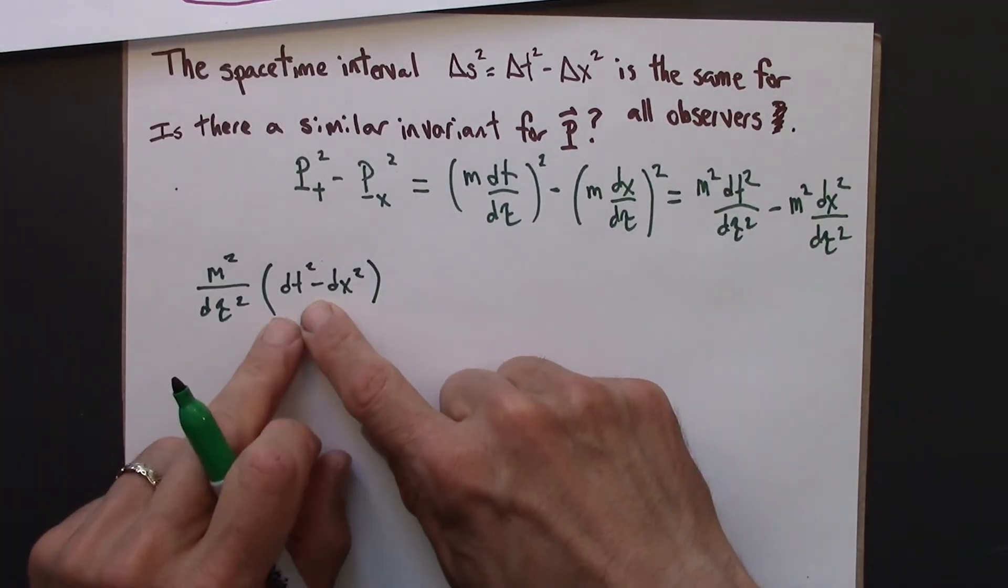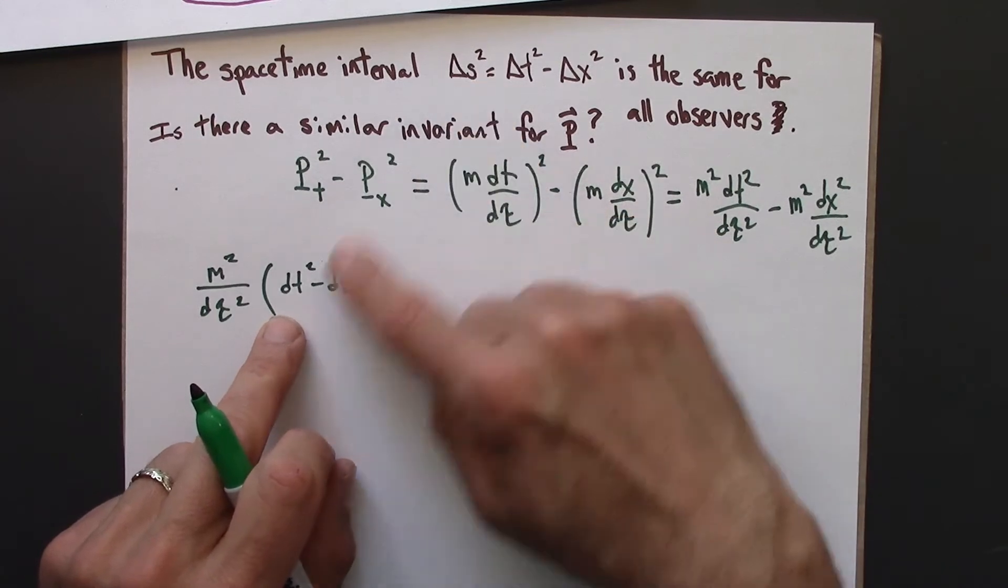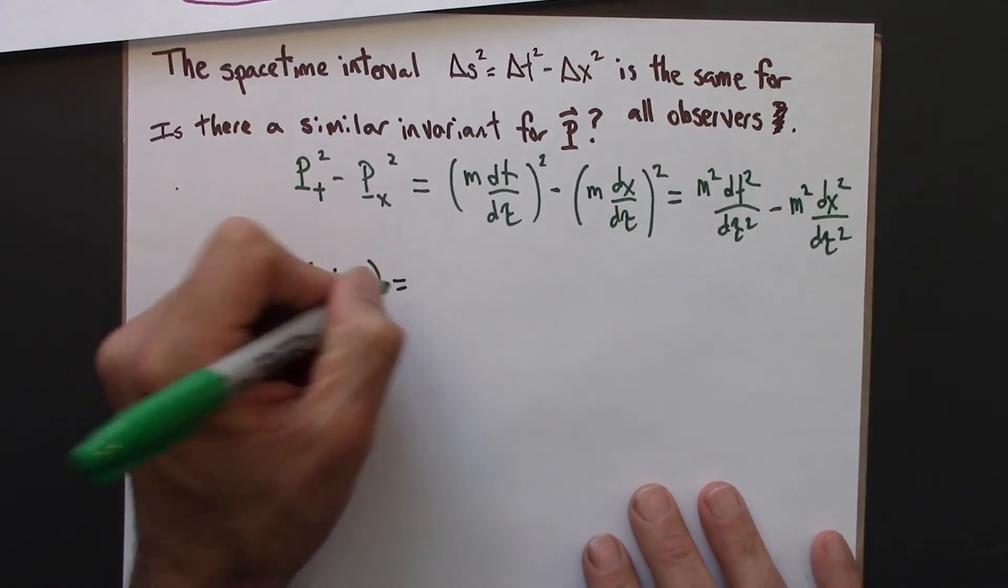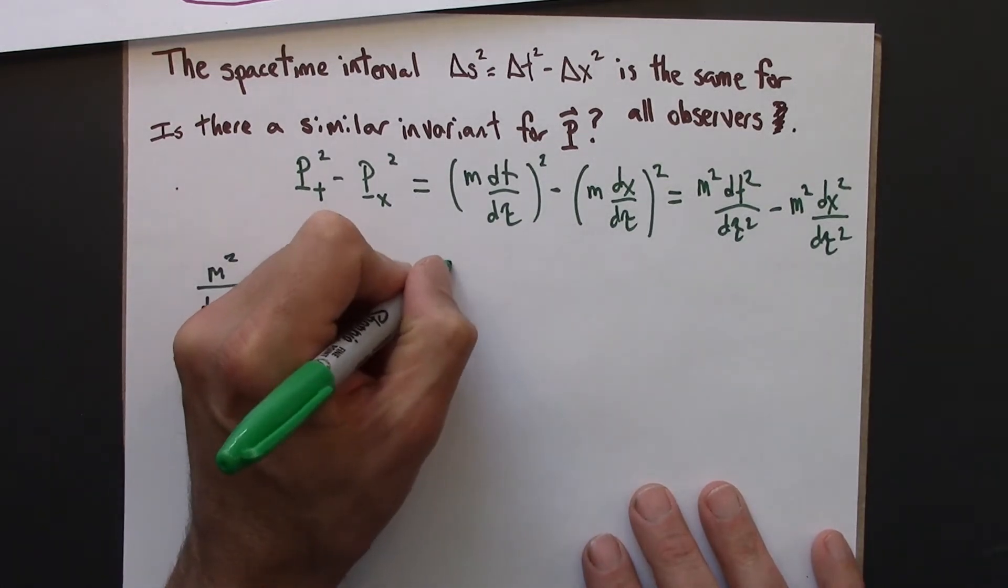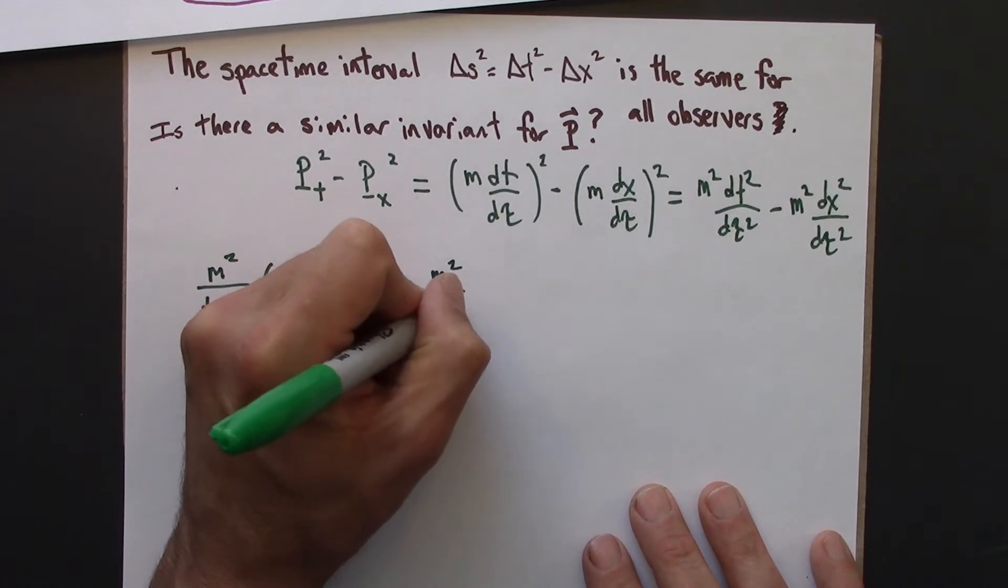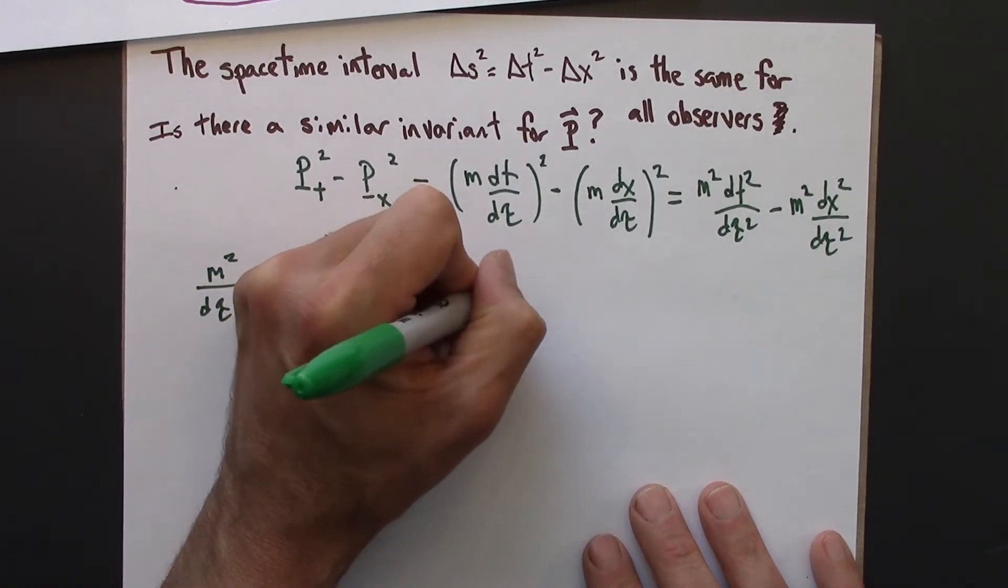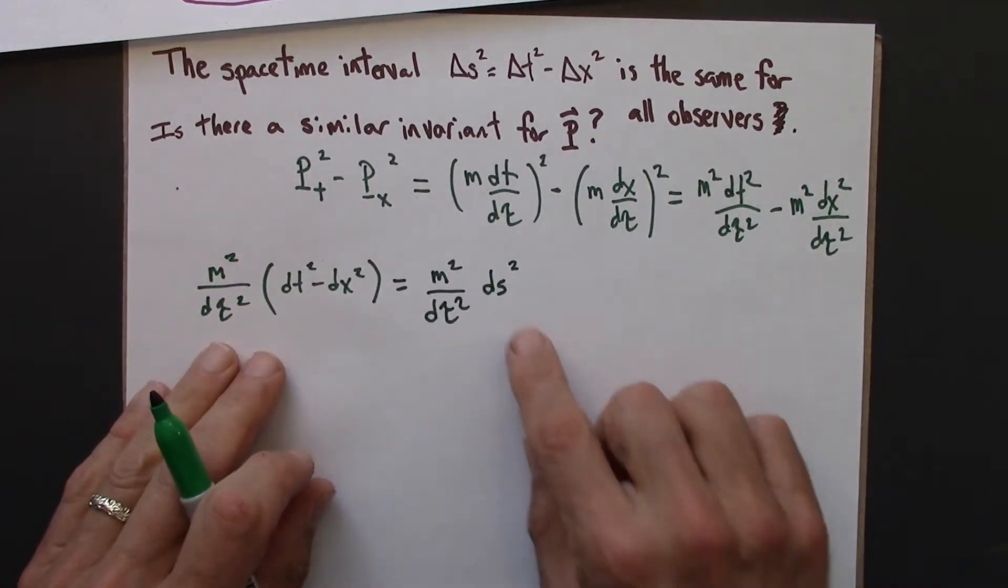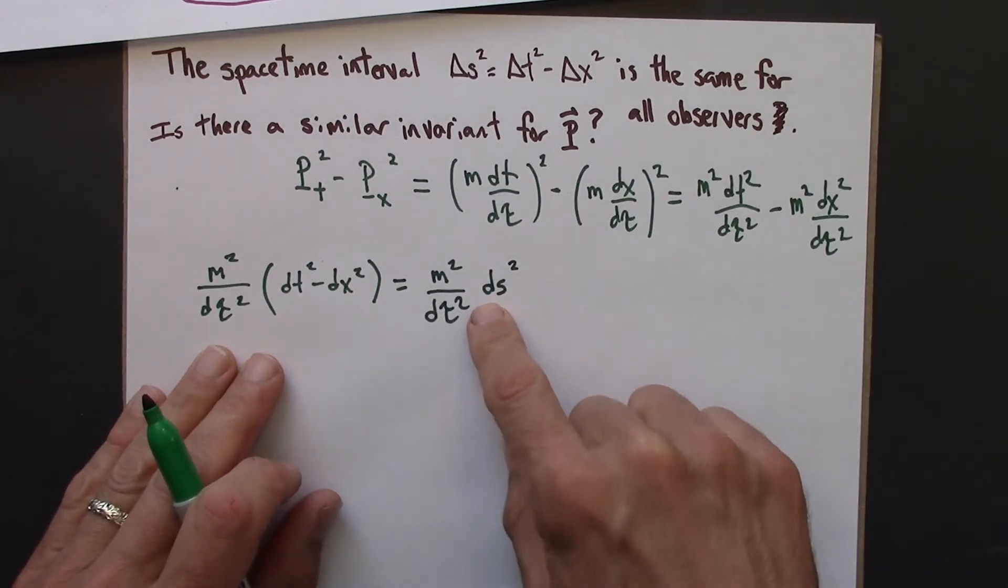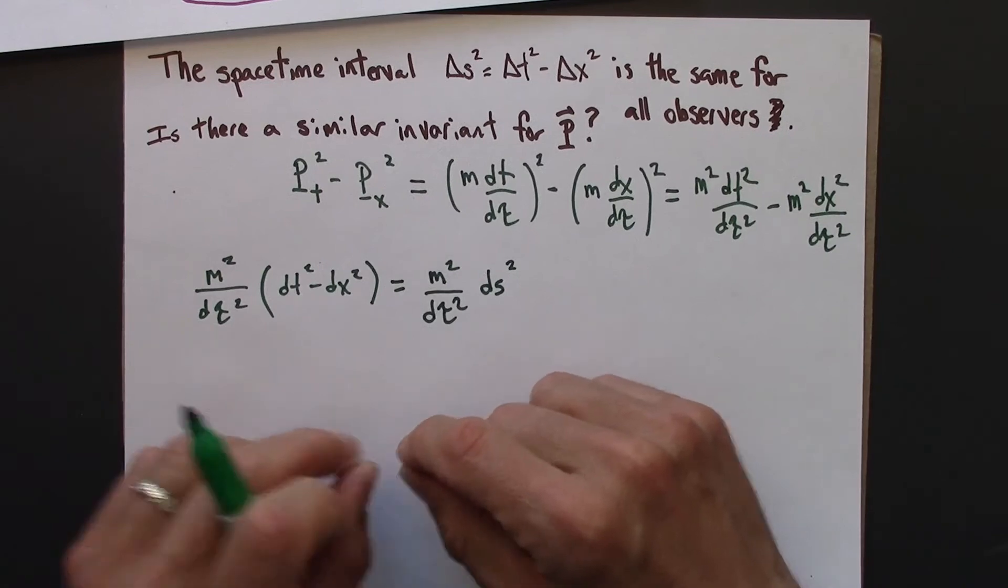Hey, you know what, that is just the spacetime interval. That's the definition of the spacetime interval. So, d tau squared, and I'm writing a lowercase d here,